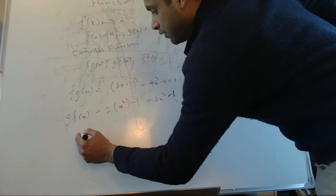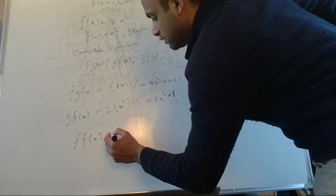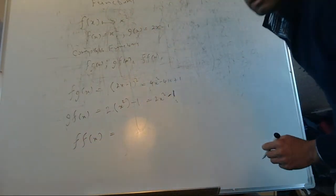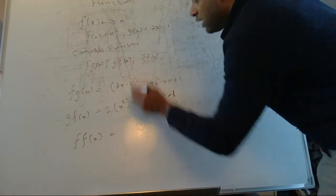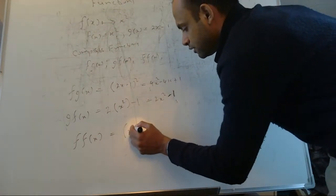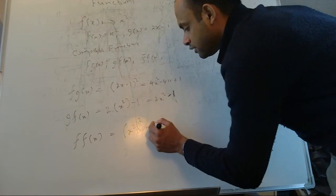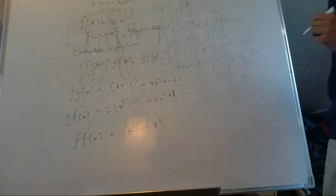Let's try f of f of x. That means function f goes into itself. You have x squared as function f; putting that back into x squared gives x squared squared, which is x to the 4.